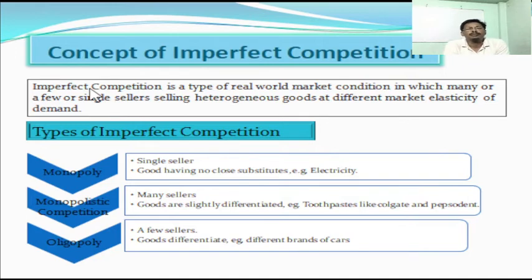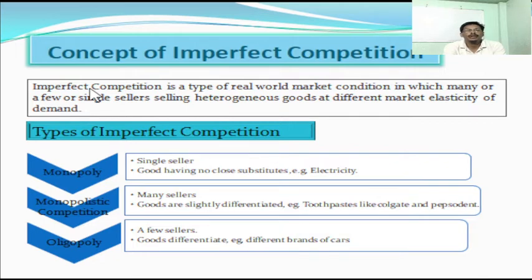In economics, market conditions exist in two types of competition. One is called perfect competition, another is called imperfect competition. To be a perfect competition, the market must have a large number of sellers producing homogeneous goods — that means goods must not have any differences in quality, goods must be the same in quality, or goods must be perfect substitutes of one another and must be sold at the same price. Then the market is considered to be a perfect competitive market.